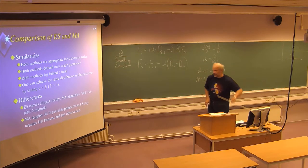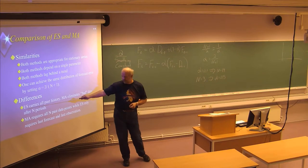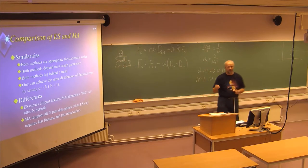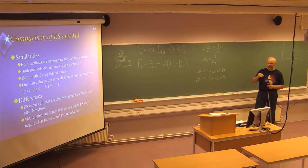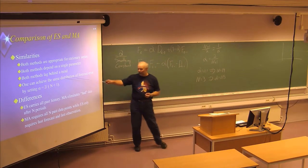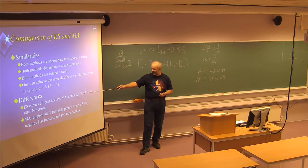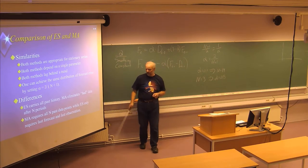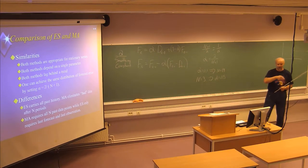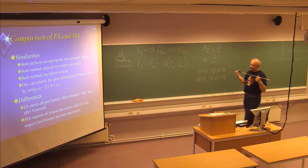Looking at the differences: exponential smoothing will carry all the past history, but the importance or weight of old data points will be smaller and smaller — they will still be included in the forecast method. The moving average will eliminate old data after a certain number of periods. After n periods, the data point will be eliminated and will not be part of the basis for the forecast.